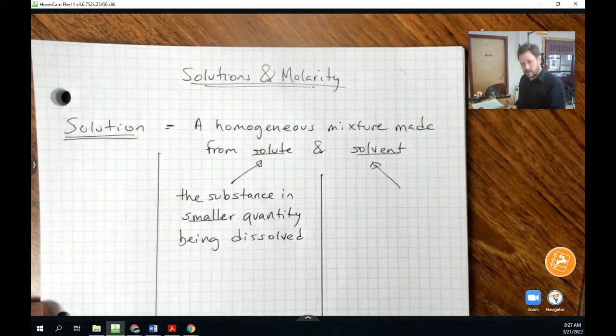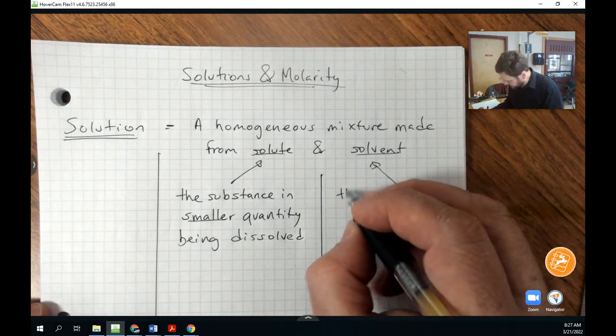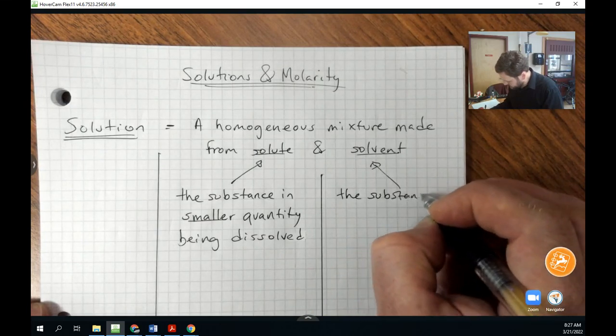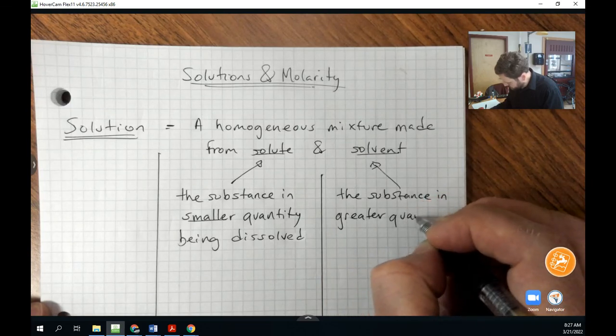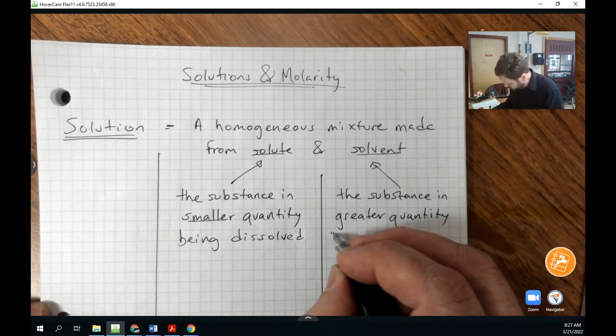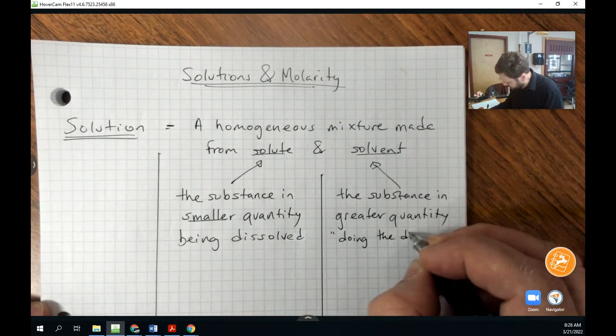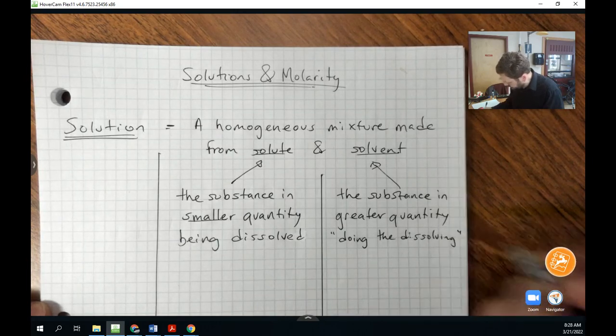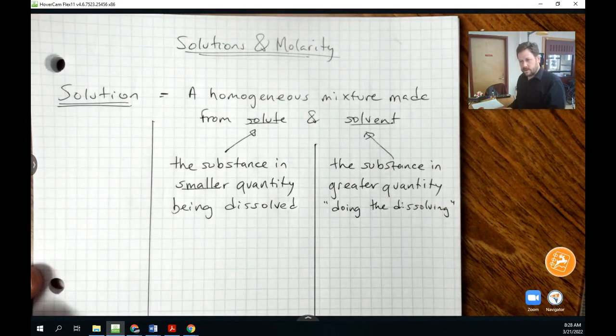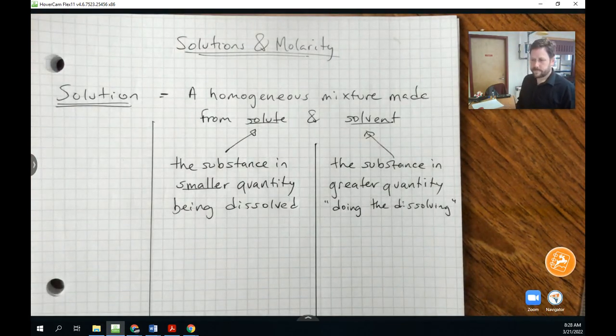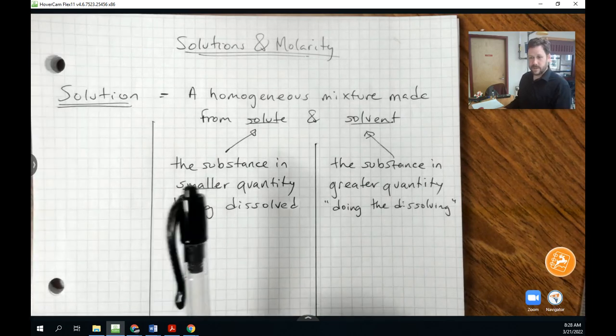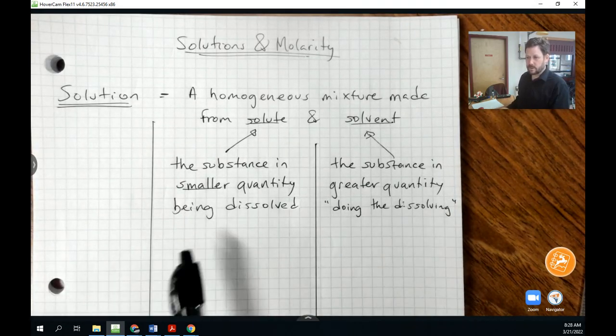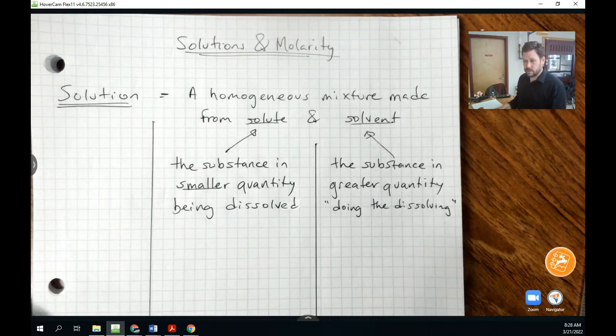And over here, we're going to write the substance in greater quantity. And I'm going to write doing the dissolving. Although that's kind of a strange phrase. How do you do dissolving? Well, it turns out that dissolving is going to occur because of intermolecular forces of attraction. Most commonly, it will be something like an ion-dipole interaction between the solute and the solvent, or a dipole-dipole interaction, or a dipole-induced dipole.